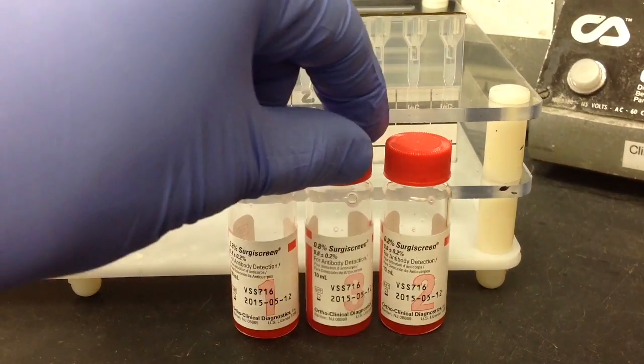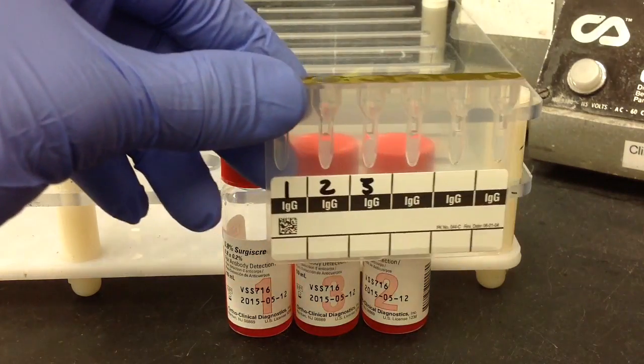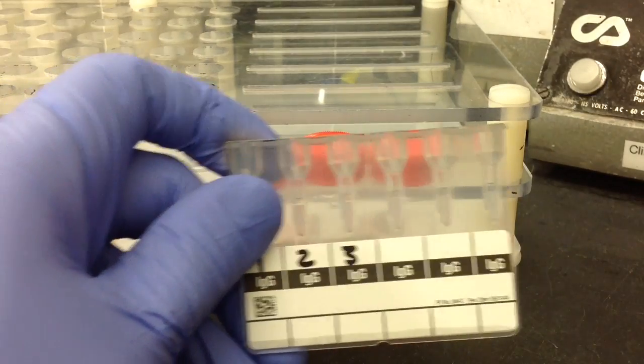First thing you need to get together is your reagent red cells and you're also going to need to get a gel card. I've already labeled mine for the corresponding reagent red cells.